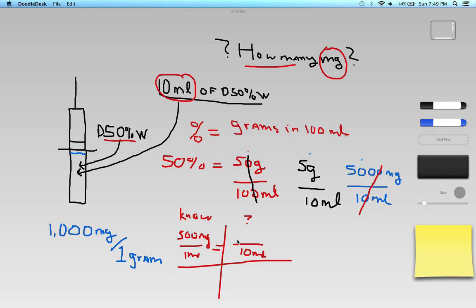Remember, milliliters on bottom, milligrams, whatever mass on top. And I'm going to put an X here because I don't know. Then I can run through the process of cross-multiplying and solving for X. That's certainly one way of doing it.